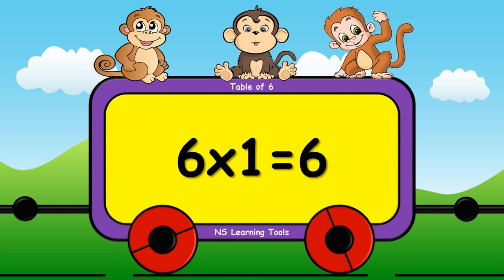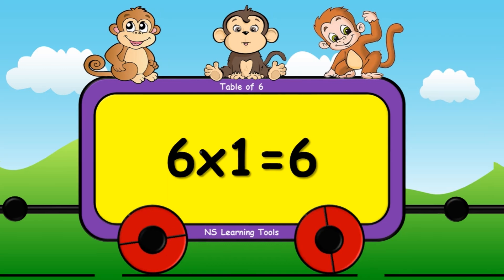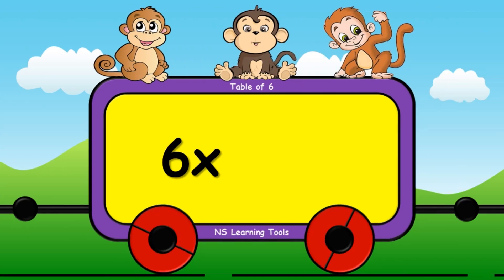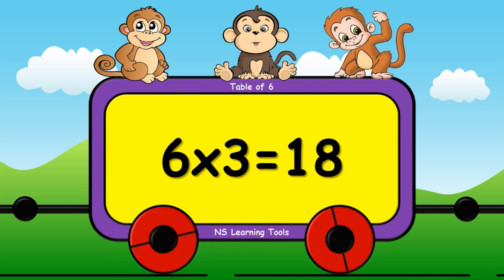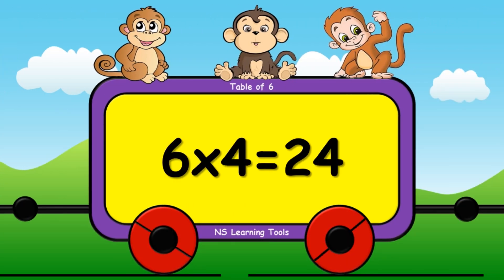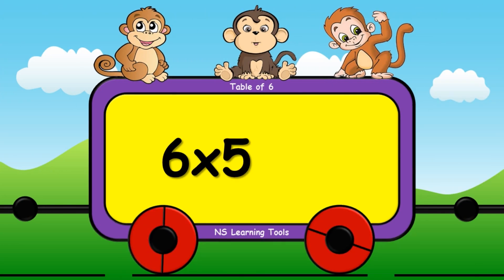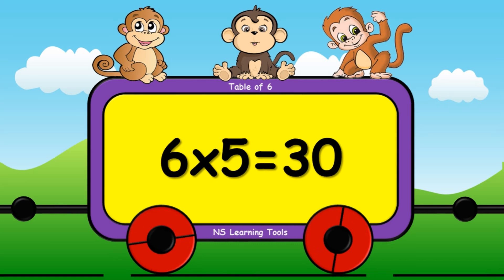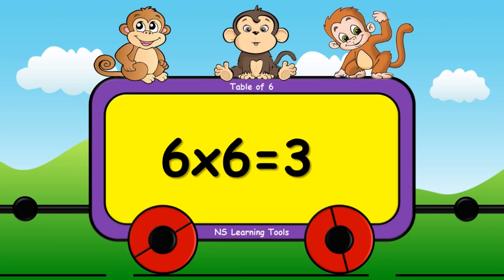Six ones are six. Six twos are twelve. Six threes are eighteen. Six fours are twenty-four. Six fives are thirty. Six sixes are thirty-six.